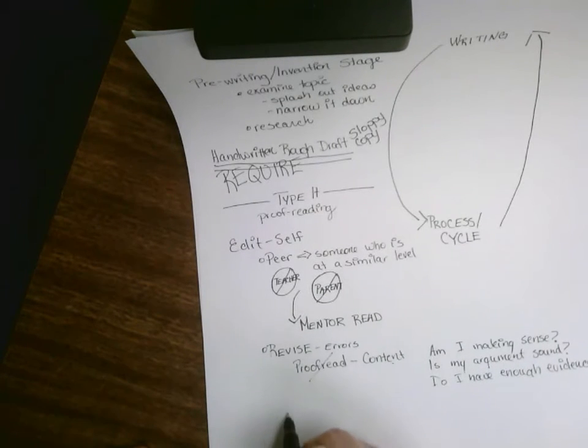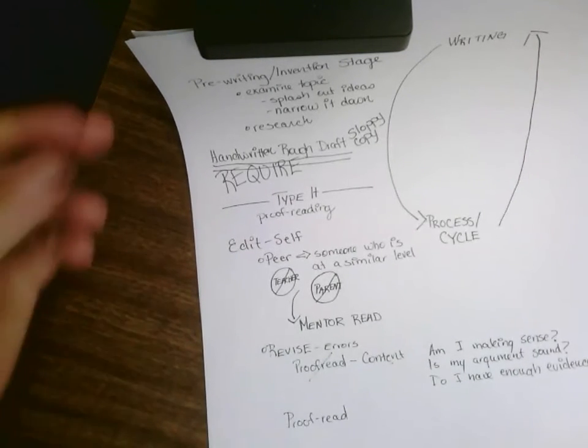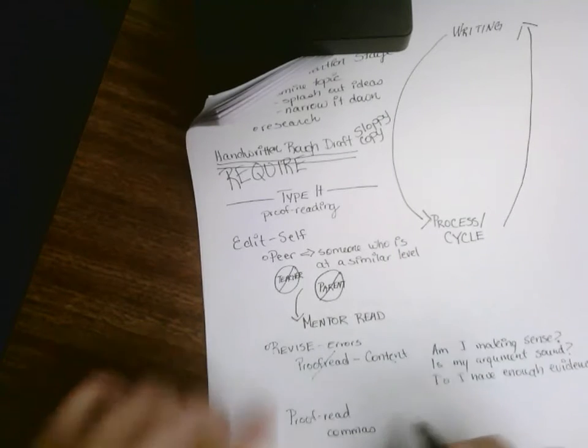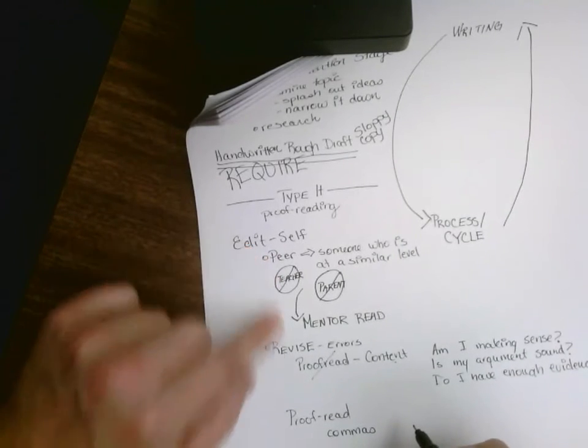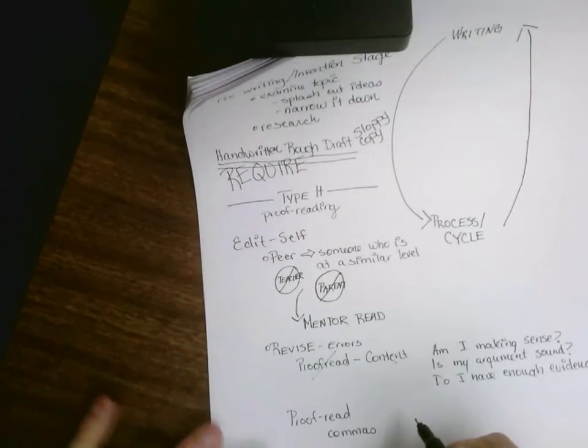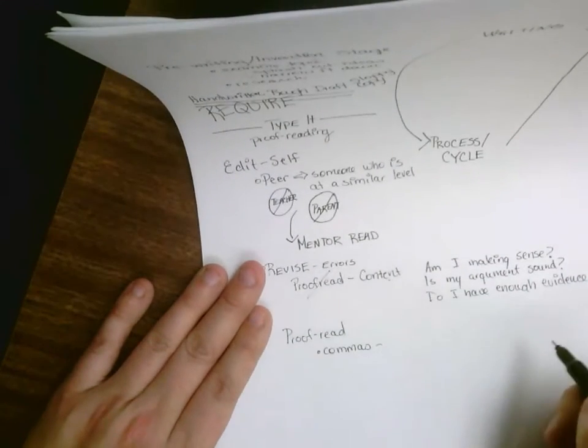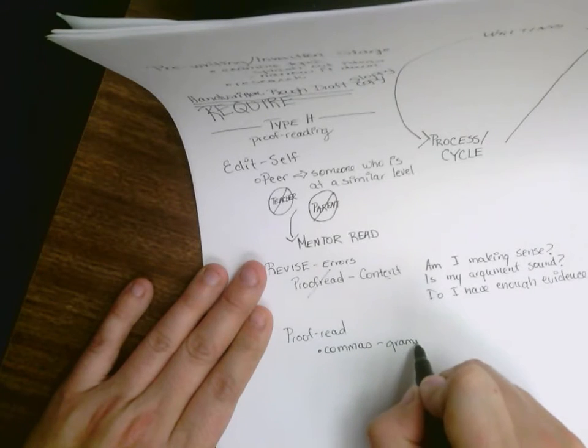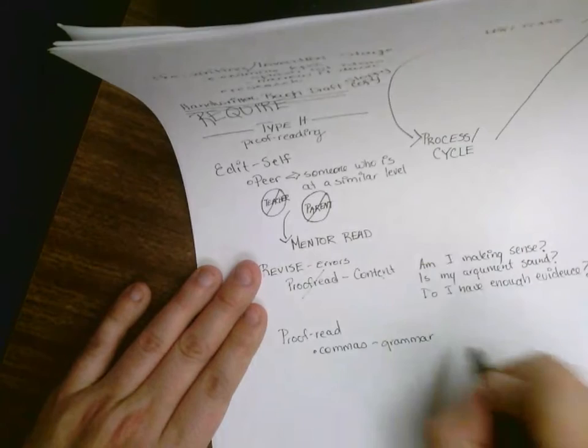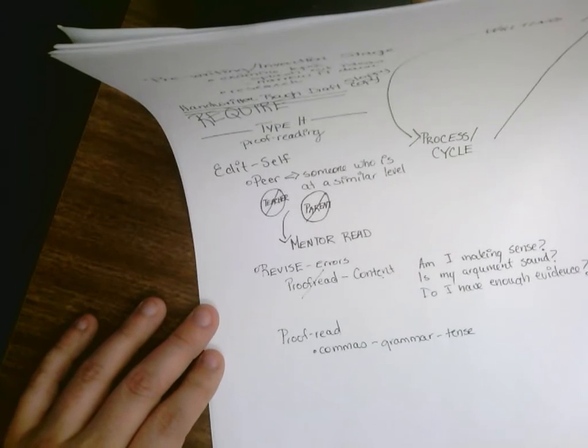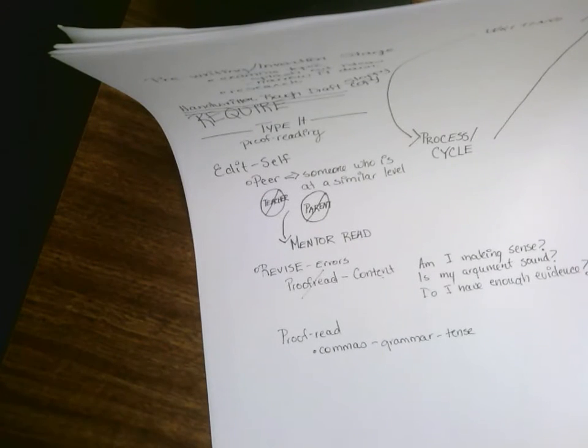After we do the content, then we do the proofread. At this point, we've probably already caught many of the big issues, but this is where we're going to look for the commas on purpose. We've probably already caught some of the commas and the spelling, so this is where we're really looking for the problems. We're making sure that the commas are right, that the grammar is correct, that we don't have problems with tense, verb tense, that we don't have problems with noun or verb agreement, that everything is a nice smooth flow to it.